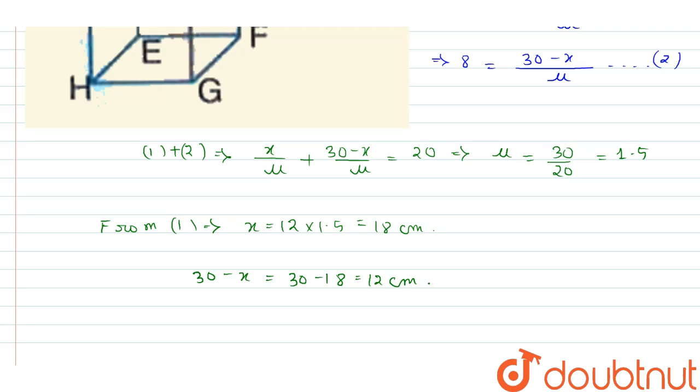So the refractive index is 1.5, and the actual position of the bubble is at normal distance 18 cm from face ABEH, or at distance 12 cm from face CDGF. This is our answer. Thank you.